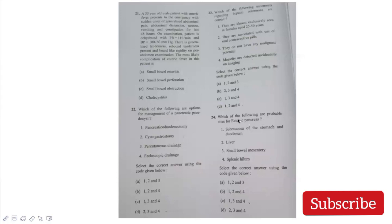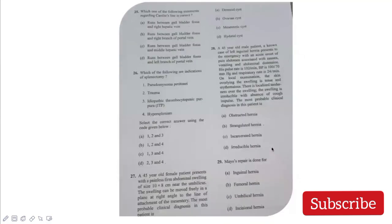Which are probable sites for ectopic pancreas? Submucosa of stomach and duodenum - yes. Liver - yes. Splenic hilum - yes. Small bowel mesentery - no, this is wrong. I've referred this in Bailey textbook, they clearly state that liver, submucosa of stomach, and splenic hilum are included. Which statements regarding Cantlie's line are correct? We know it runs between the IVC and the gallbladder fossa. But they've slightly twisted this question. The correct answer is it runs between gallbladder fossa and the middle hepatic vein. Middle hepatic vein corresponds to the IVC.